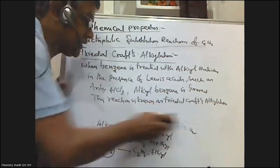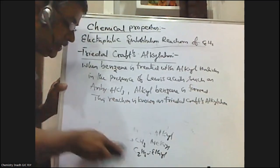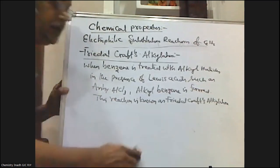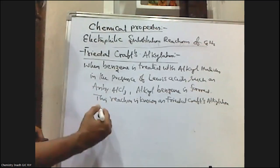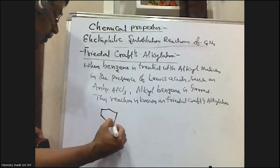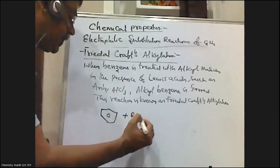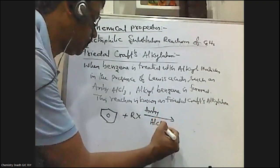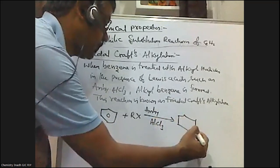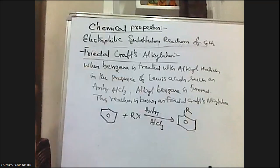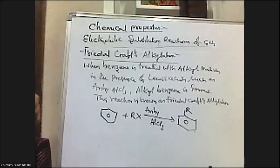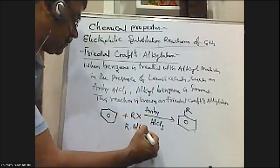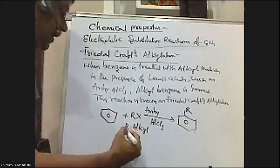When benzene is treated with an alkyl halide in the presence of Lewis acids such as anhydrous aluminum chloride or ferric chloride, alkyl benzene is formed. The alkyl group is generally represented with capital R. So when benzene is treated with RX in the presence of anhydrous aluminum chloride or ferric chloride, alkyl benzene is formed. This reaction is called Friedel-Crafts alkylation, where X is a halogen — fluorine, chlorine, etc.